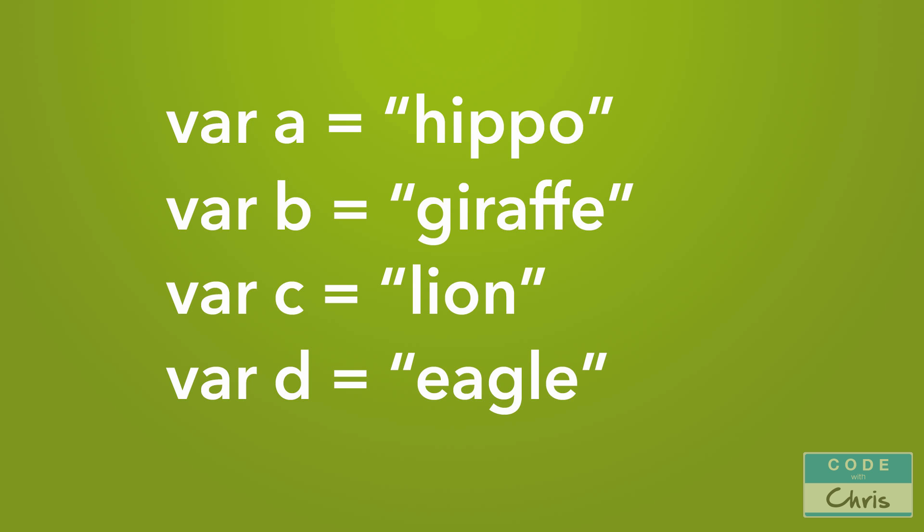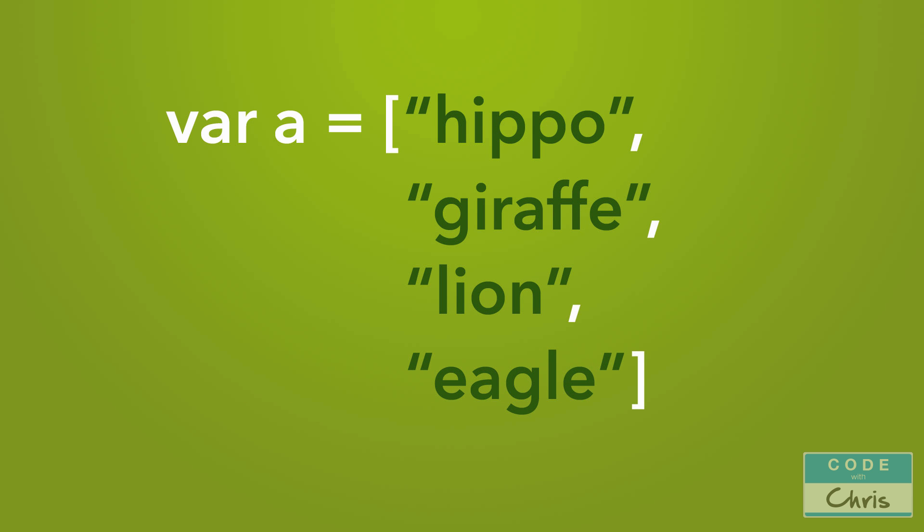An array could be very useful in this sort of scenario, because an array is an object that will allow you to store all of those strings and you can reference them by index. You can imagine the array almost like a snake of variable values. Now let's go back to our playground and take a look at how to declare and use an array.